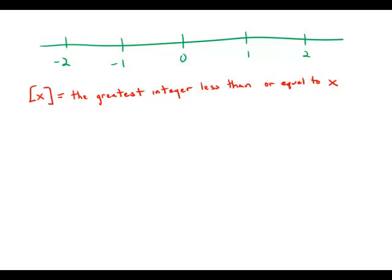X bracket denotes the greatest integer less than or equal to x. Well, let's think about this for a second.